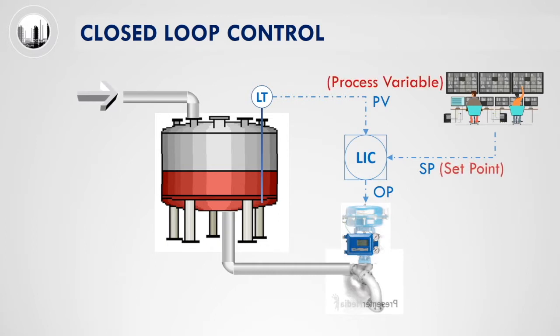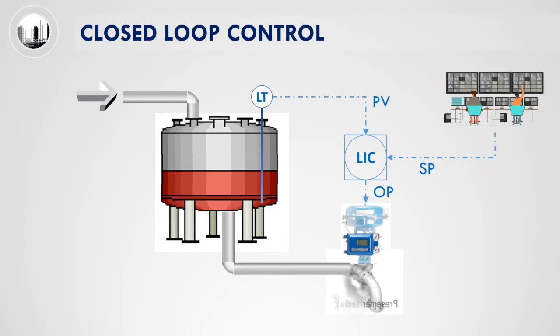When the process variable PV and the set point SP are the same, there is no error. Thus, there is no change to the control valve opening percent.